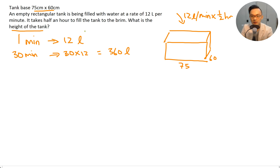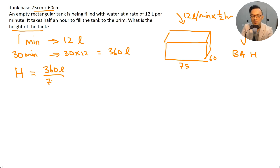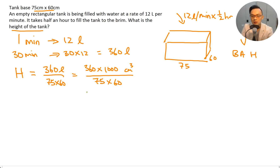Height equals volume divided by base area. Height of the tank equals 360 liters divided by base area 75 times 60. Need to convert liters to cubic centimeters: 360 times 1000 equals 360,000 cubic centimeters, divided by 75 times 60. That gives the answer in cm.